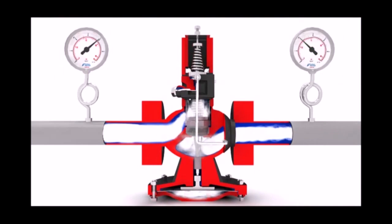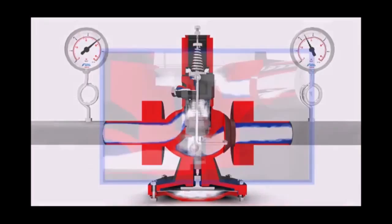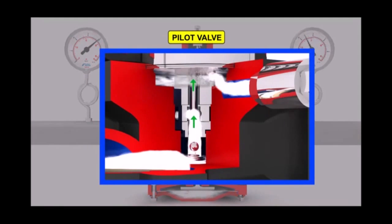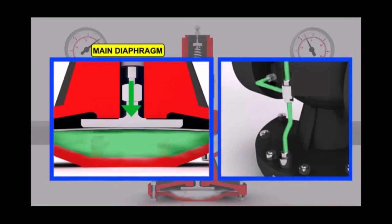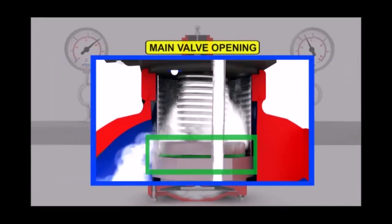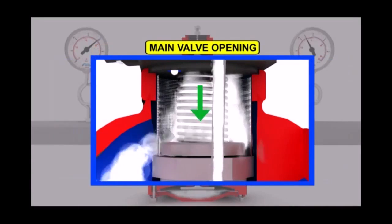an increase in the downstream pressure caused by a reduction in the steam load will move the pilot valve plunger upward and reduce the control steam flow under the main diaphragm, which in turn reduces the opening of the main valve and maintains the set downstream pressure.